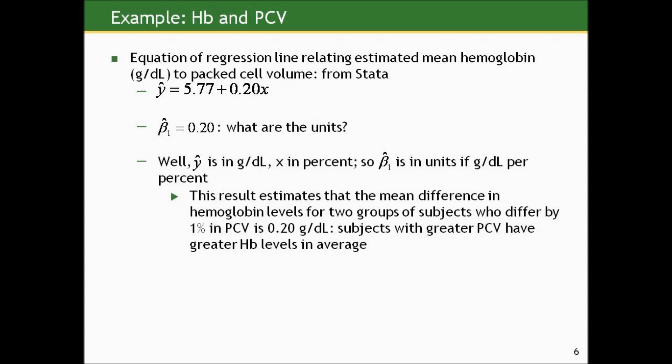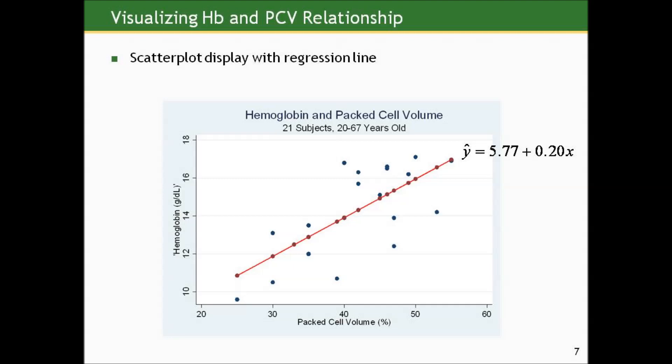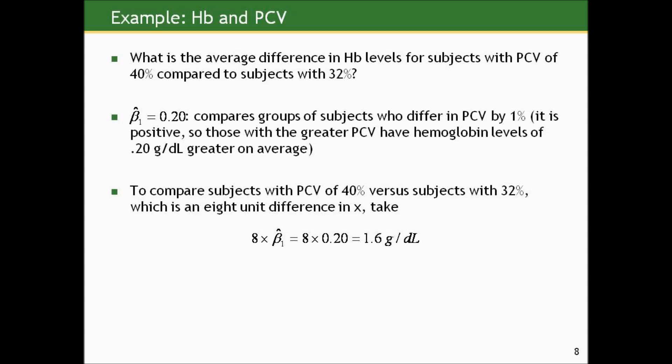That's the average difference between any two groups differing by 1%. To make it clear, this difference is positive — a positive association. Subjects with greater packed cell volume have greater hemoglobin levels on average. Here's the scatterplot with the regression line. There's still a lot of variability around the points, but it looks like we've captured the essence of that relationship — the average does follow a line reasonably well.